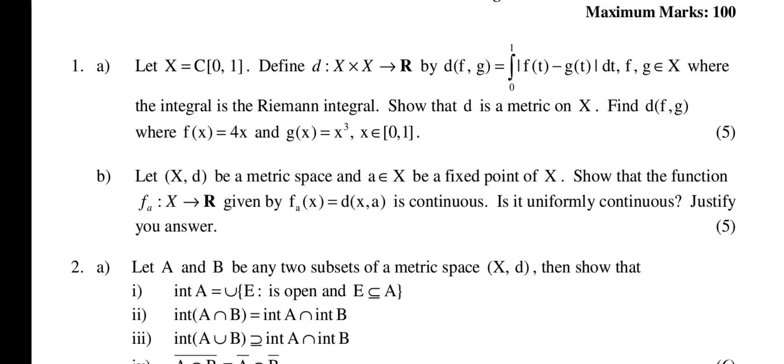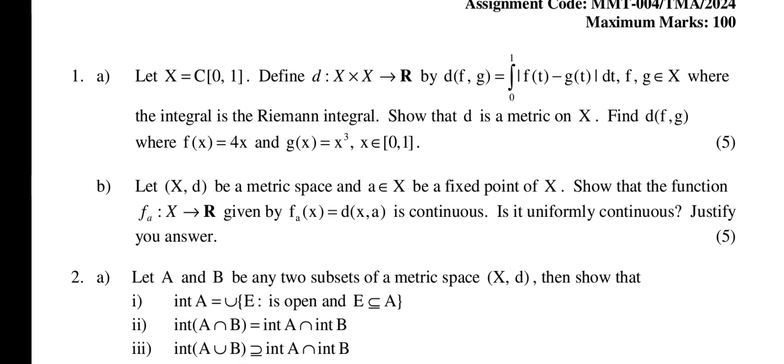This question is: Let X = C[0,1]. Define d: X × X → R by d(f,g) equals the integral given, where the integral is the Riemann integral. Show that d is a metric on X. Find d(f,g) where f(x) = 4x and g(x) = x³, x ∈ [0,1].